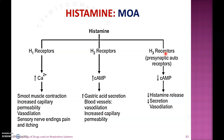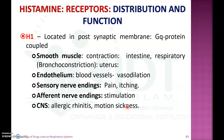Histamine binds with H1, H2, and H3 receptors present at different sites of the body and produces different actions. The first receptor is the H1 receptor, located in the post-synaptic membrane. It is a Gq-type protein-coupled receptor present in smooth muscles like the intestine, respiratory tract, and uterus. Upon release of histamine during inflammatory response, it produces smooth muscle contraction.